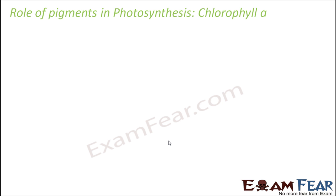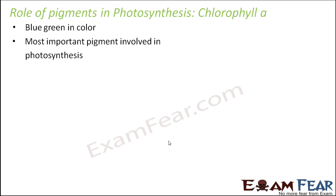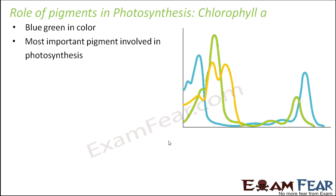Chlorophyll A is a blue-green colored pigment and it is the most important pigment involved in the process of photosynthesis. It is the pigment which primarily absorbs light from the visible section. Maximum absorption occurs in the blue-red region of the spectrum, as we observed from the Engelmann experiment — the oxygen-loving bacteria accumulated more in the red and blue region, meaning maximum photosynthesis occurred in those regions. So maximum absorption of light also occurs in the blue and red region of the spectrum.